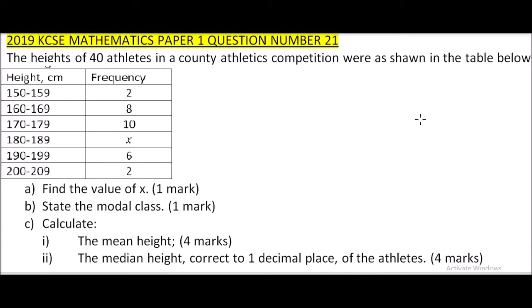Using the data, we are supposed to find the value of x. x is one of the values that has not been given, and we are told the total number of athletes are 40. So what we do is add the other values, and when you add that you get 28. You subtract from 40, you get 12. So x equals 12, the frequency of that particular class 180 to 189.